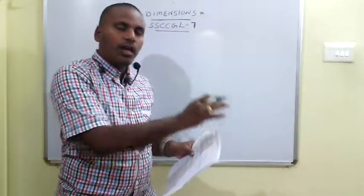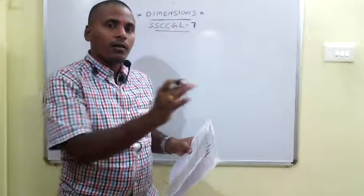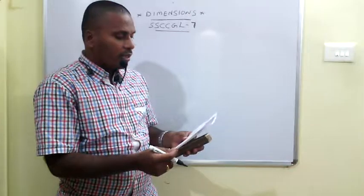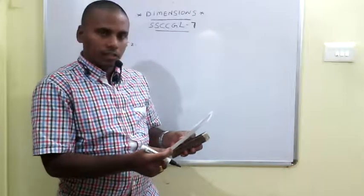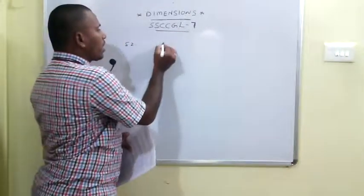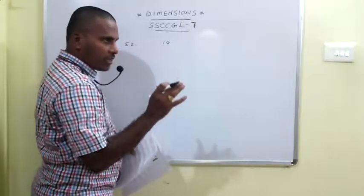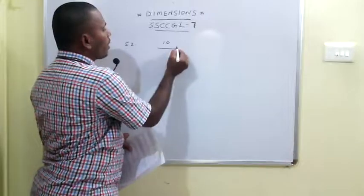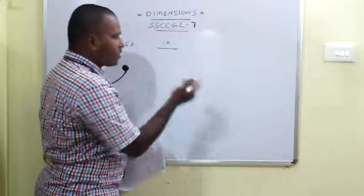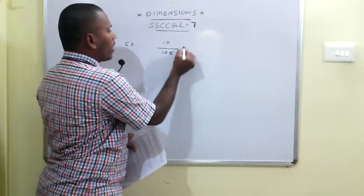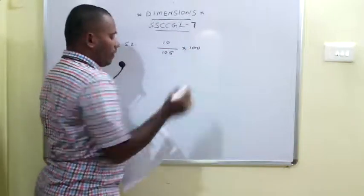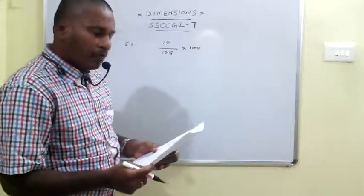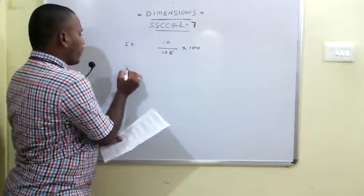95 are usual children and 10 children come from 5 twin cases. They ask us to calculate the percentage of twins out of total children born. Twin children are 10; total children are 95 + 10 = 105. So 10 divided by 105 into 100 gives the required percentage, which is approximately 9.5%.